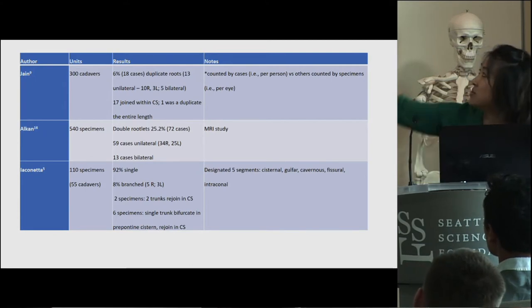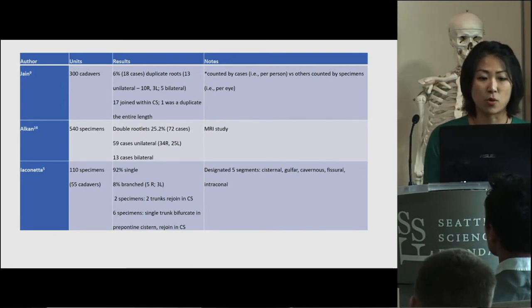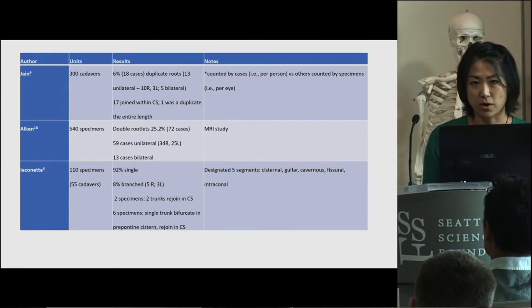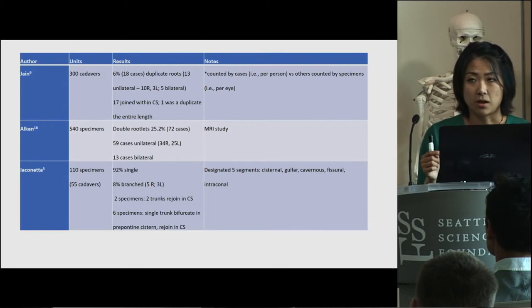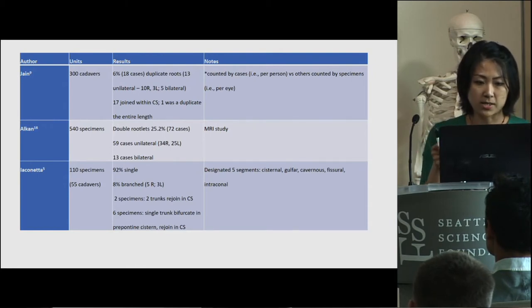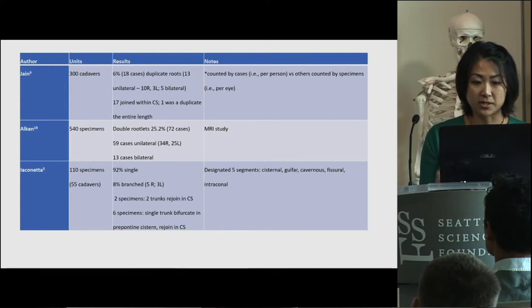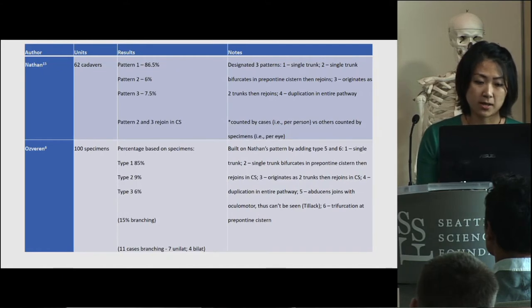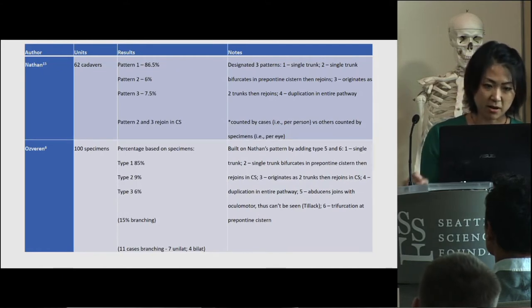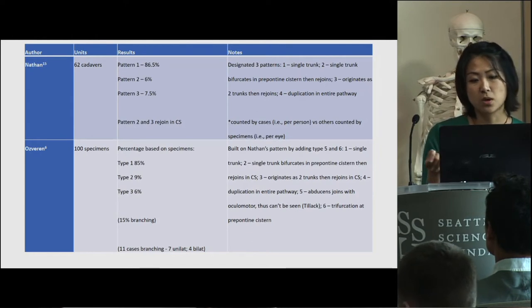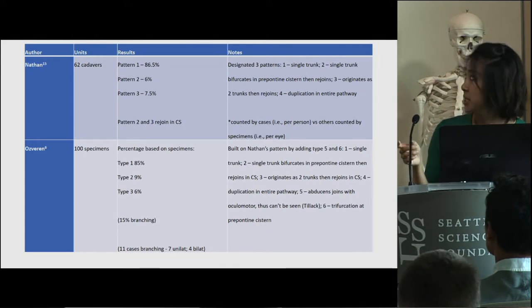In Jane et al., the first row in the table, he used 300 cadavers and found only 18 cases with a duplication. In 17 of these cases, the nerve came out as duplicates but joined within the cavernous sinus, and only one was a duplicate along the entire length. Jane counted by case — that is, per person — whereas some other studies counted per eye, such as Nathan et al. and Osverein et al., who designated patterns to the variations they observed.